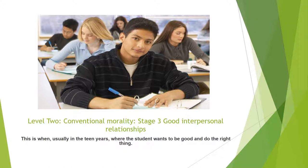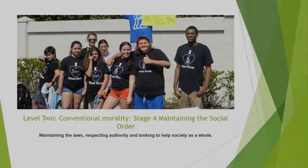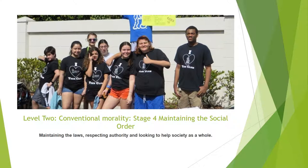Level 2, conventional morality, Stage 3: good interpersonal relationships. This is usually in the teen years where students want to be good and do the right thing. In Stage 4 of Level 2, maintaining the social order — maintaining the laws and respecting authority and looking to help society as a whole. These teens are working together to benefit society.